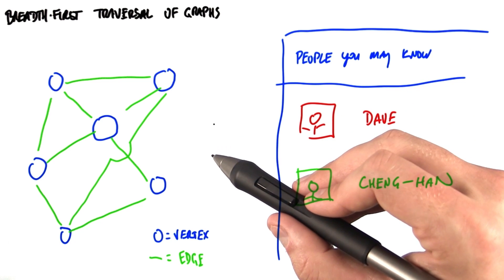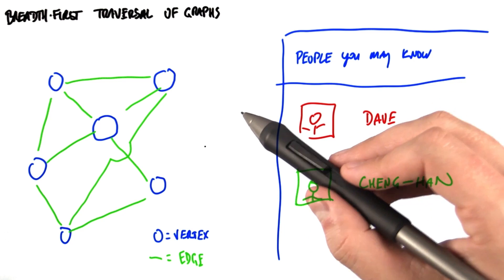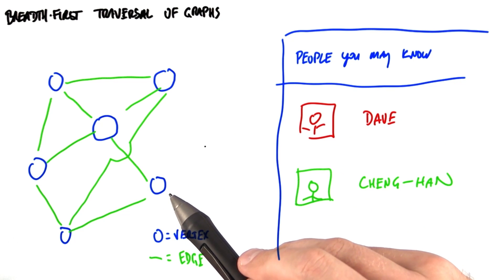Web crawlers must traverse the web to catalog it for searching. How do they make sure they visit each web page once and only once? A traversal of the web graph will allow them to do that.